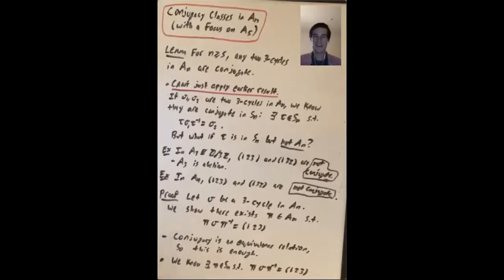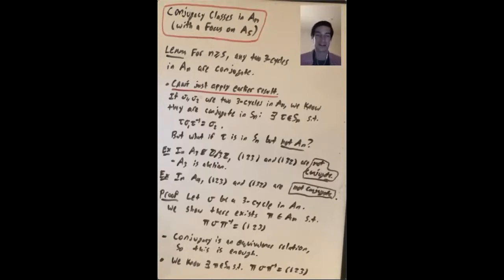In this video, we'll talk about conjugacy classes in AN in general a little bit, but then we'll focus on conjugacy classes in A5, where we'll say everything. The full story about how conjugacy classes work in AN is really interesting and a little bit complicated — more complicated than in SN. There are some nice exercises in Dummit and Foote for you to work through some of the details.